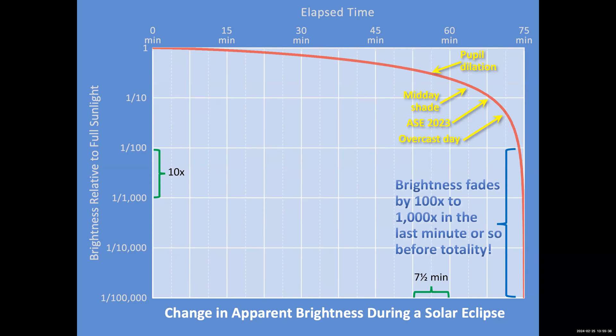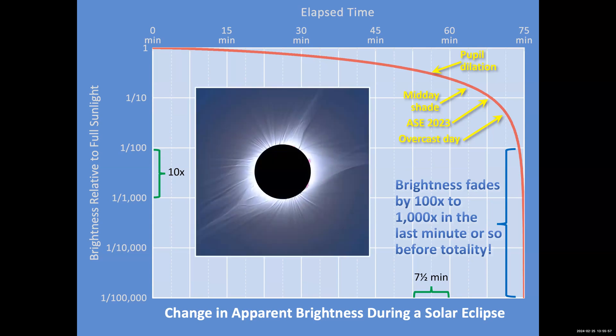In the last minute, brightness fades from a hundred to a thousand times as you are plunged into darkness. It goes from a little darker than an overcast day all the way to late twilight or full moon dark in about one minute. It is much faster than anything else. And then you get to see totality.